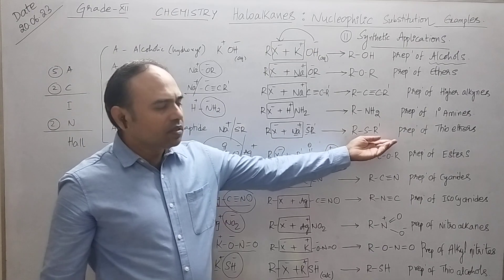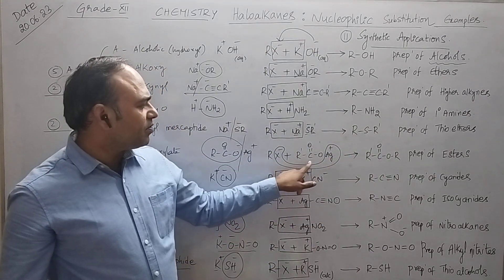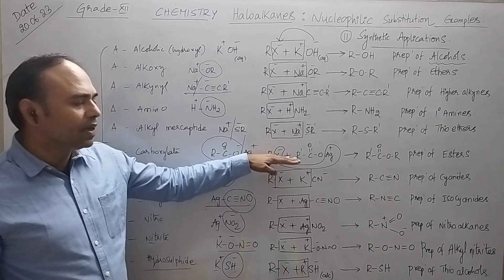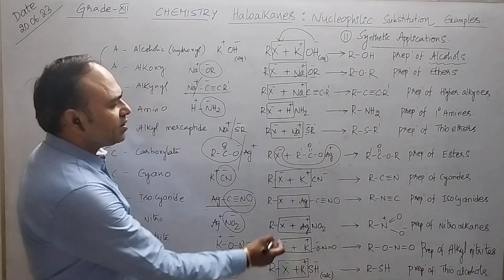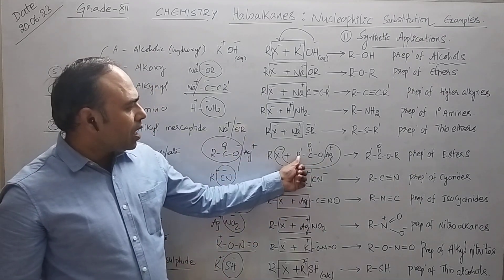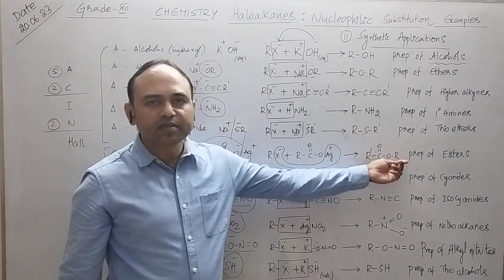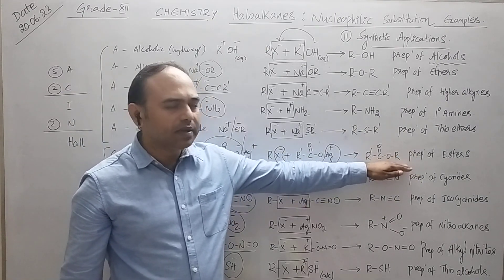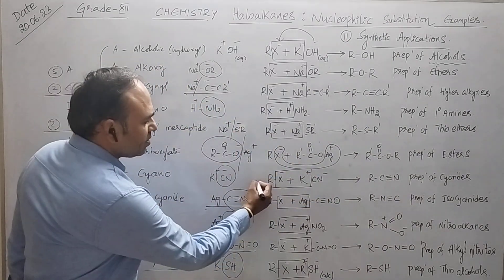Next one, silver salt of carboxylic acid. I'm not representing R here, you can take CH3 or C2H5. So in this condition, AgX is separated out and you are getting R dash COOR. You know that COOR group is nothing but ester, so this is the application of haloalkanes to prepare esters.